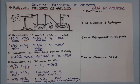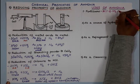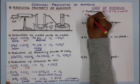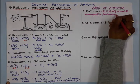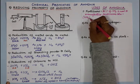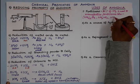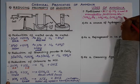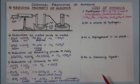Now let us understand the uses of ammonia. The main use is in fertilizers — nearly 80% of ammonia is used to manufacture fertilizers. Important fertilizers that can be prepared with ammonia include ammonium sulfate, ammonium nitrate, ammonium phosphate, and urea.